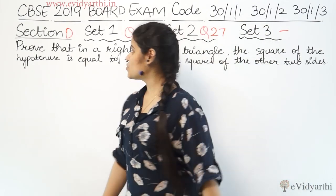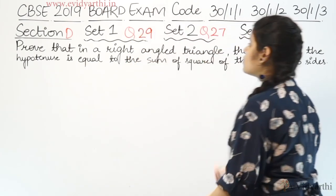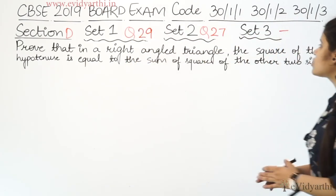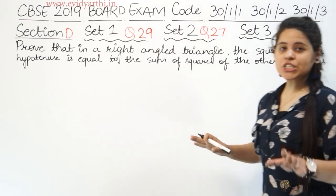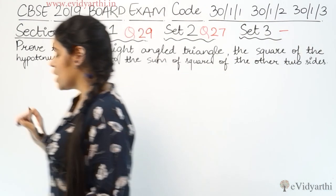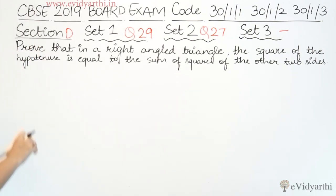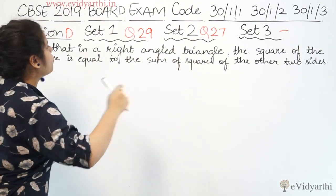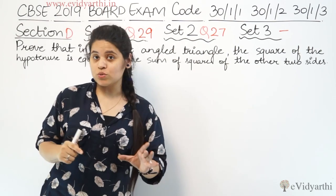Now coming to the next question. This is question number 29 of set 1 and question number 27 of set 2. Set 3 में यह question नहीं है. The question is: prove that in a right-angled triangle, the square of the hypotenuse is equal to the sum of squares of the other two sides.